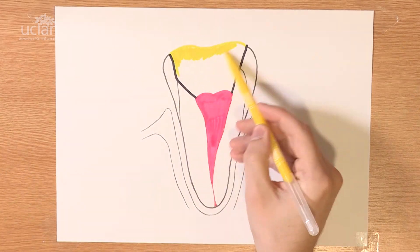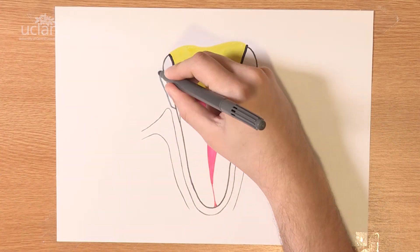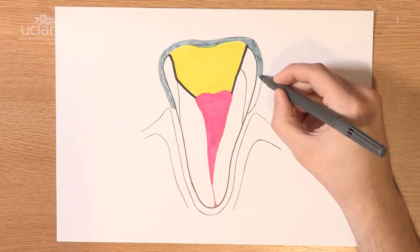A permanent filling is placed on top, which is often a porcelain or metal crown to improve the seal.